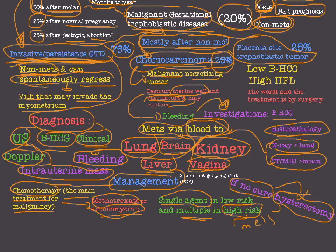Prognosis for choriocarcinoma and invasive persistent GTD is pretty good. In non-metastatic cases, survival is about 95 to 100%. In metastatic cases, the number reaches about 70%, which is still very good relatively when compared with other malignancies.